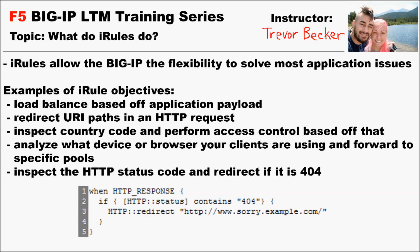iRules allow the BigIP the flexibility to solve for most application issues. With iRules, you can load balance based off of application content or redirect specific URI paths on an HTTP request. More examples of iRule objectives would be to persist connections or encrypt session cookies in certain scenarios. You can also rewrite, discard, or log client sessions. The possibilities are endless.